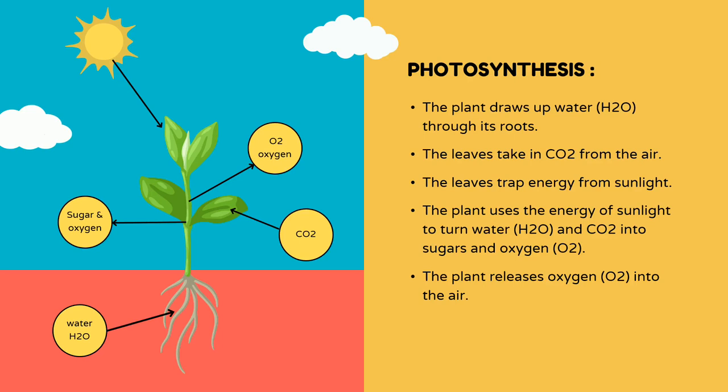The glucose is used by the plant as food and energy, but also serves as food for animals and other organisms. Photosynthesis is thus essential to the survival of all life on Earth.